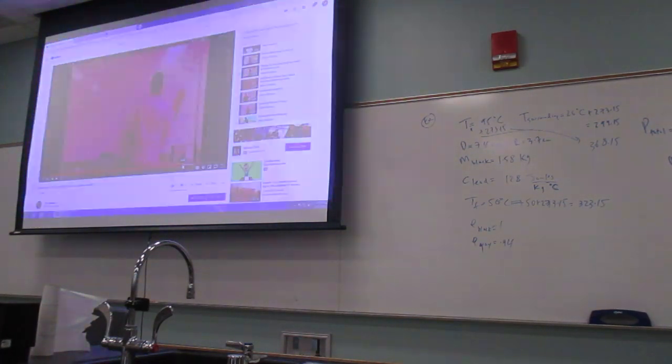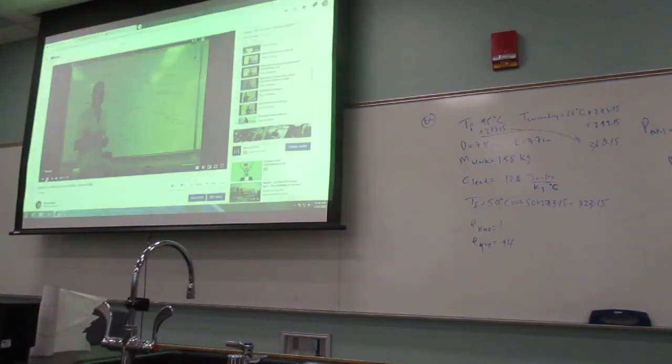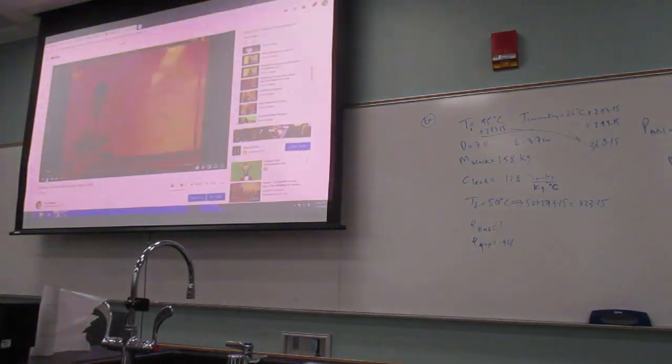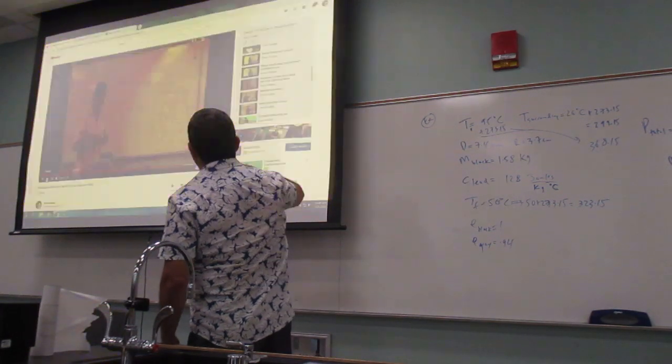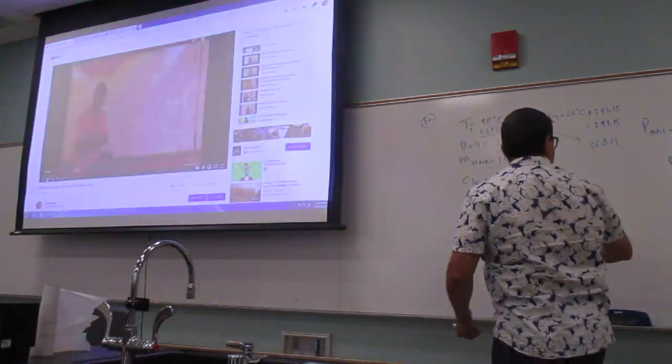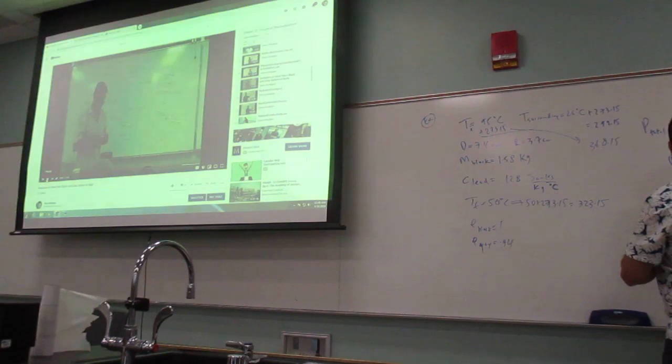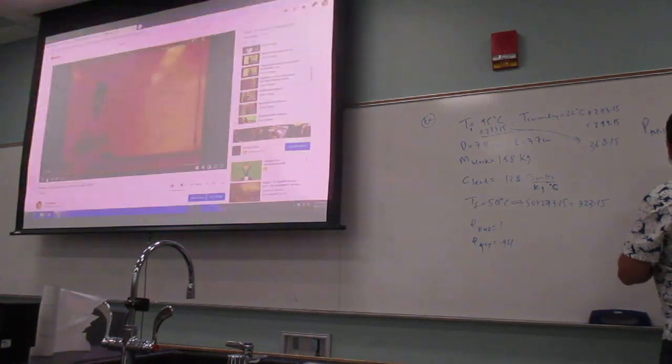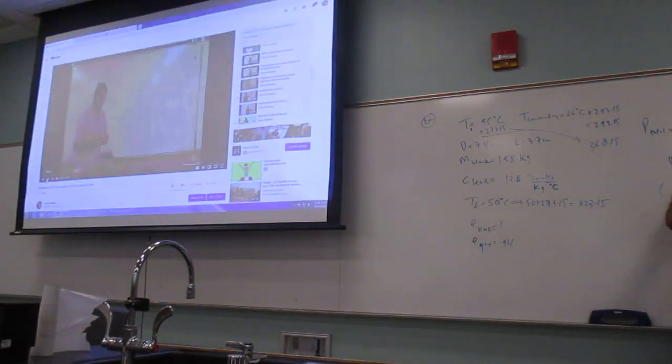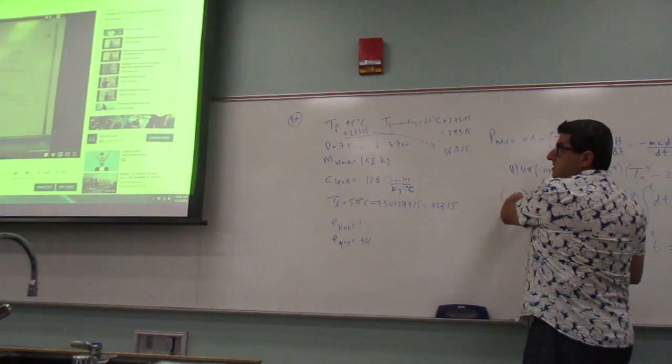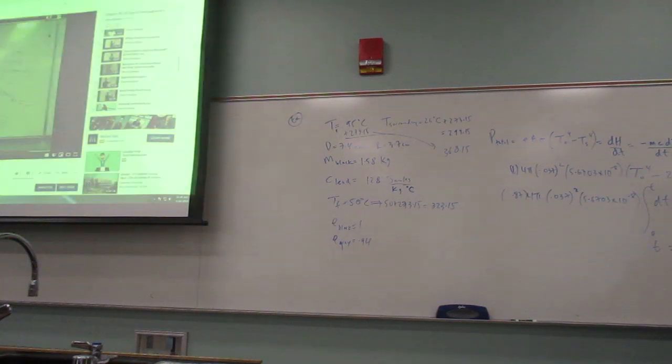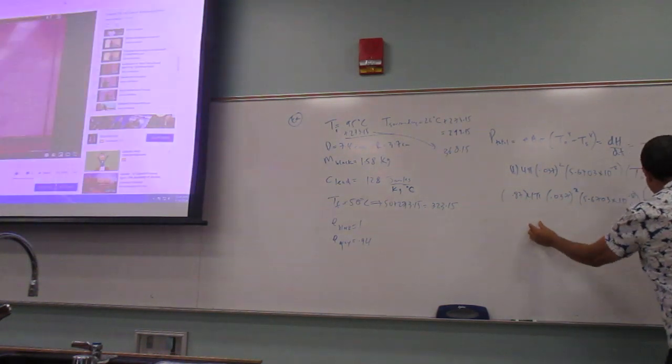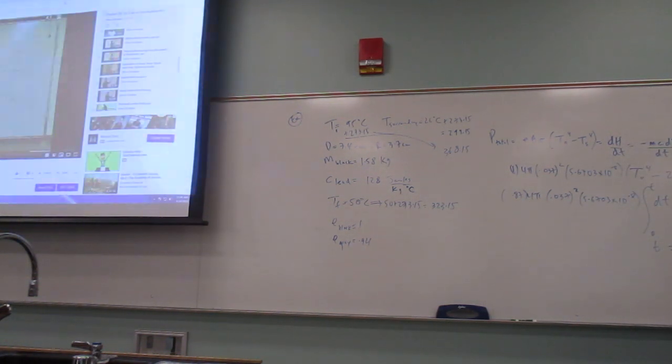So then what happens? How does the emissivity change it? I think there I'm using emissivity of 0.87 or whatever it is, 0.94. So emissivity, if it's different, it adds another factor here other than one. There I'm using 0.87. So what happens? Does that make the time longer? So then you put that over here, it goes down here, it makes the time longer. So it went up from 27 minutes to 31 minutes.